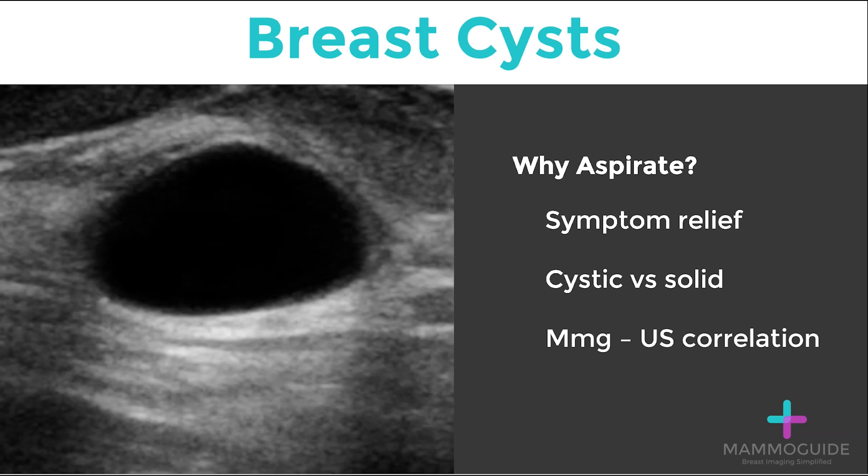If the lesion dissipates and you are able to aspirate fluid, you have proved it's a cyst and the patient can continue with regular screening. The last reason why cysts are sometimes aspirated is for mammographic ultrasound correlation. If you see a new mass on the mammogram and you're not sure if it corresponds to the cyst that you see on an ultrasound, aspirating the cyst and then performing a repeat mammogram will confirm whether or not this is the same lesion.